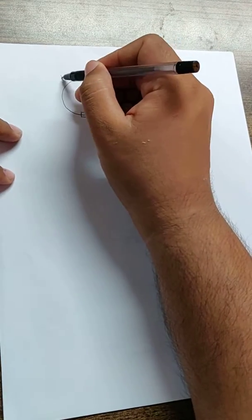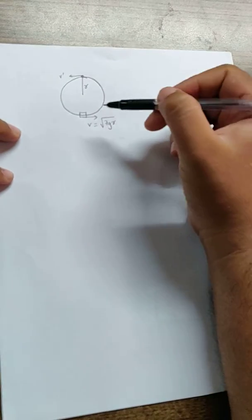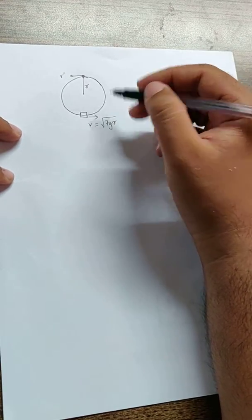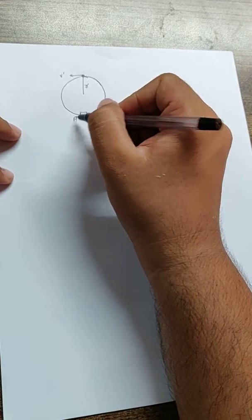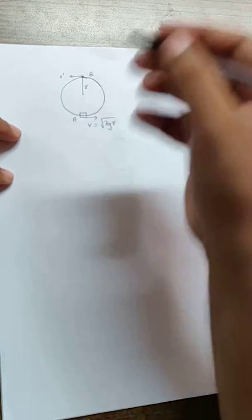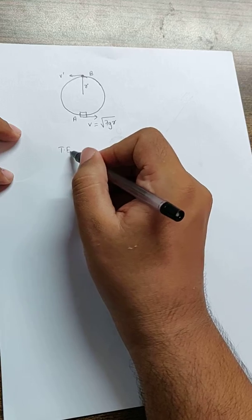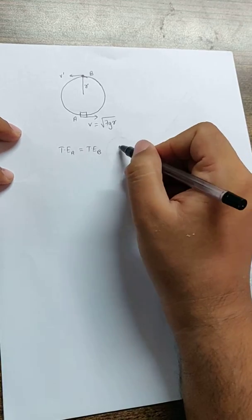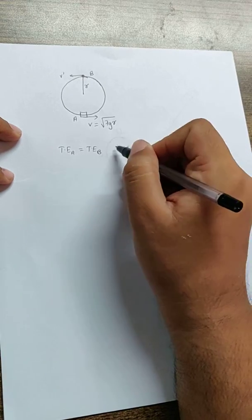So let's call this velocity as V dash. First, to find the velocity, I'm going to use law of conservation of energy and would say this point is A, this point as B. And I can say the total energy at A remains constant as total energy at B by law of conservation of energy.